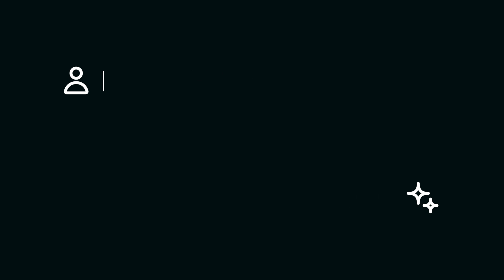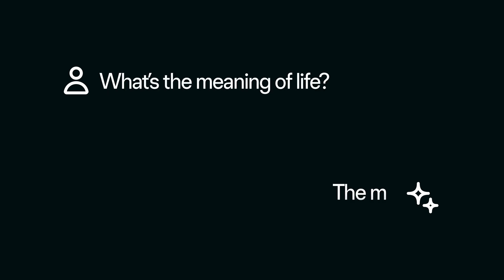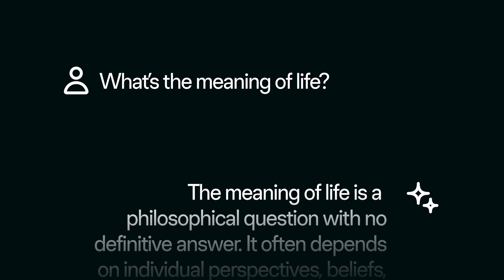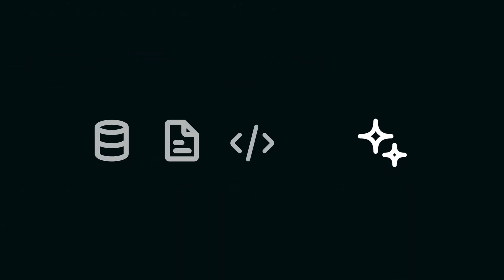Simply put, language models are predicting the next word — they're just trained on most of the words on the internet so they're really good at it. This text-based medium is powerful not just because it can interact with data, documents and code, but because predicting language results in something very special. Language is very connected with thought and reason. These models don't think in the way that you and I do, but their behavior of prediction allows us to design features in our software that seem and act very human-like.